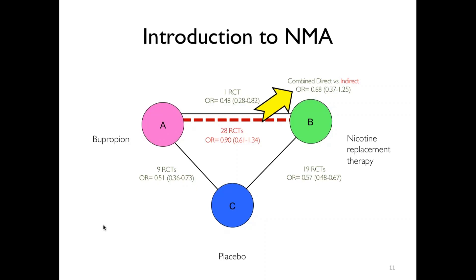In summary, an NMA is an extension of a standard meta-analysis where it is possible to calculate the relative effect of two interventions — in this case, A versus B — in the absence of direct comparisons, using a common comparator.